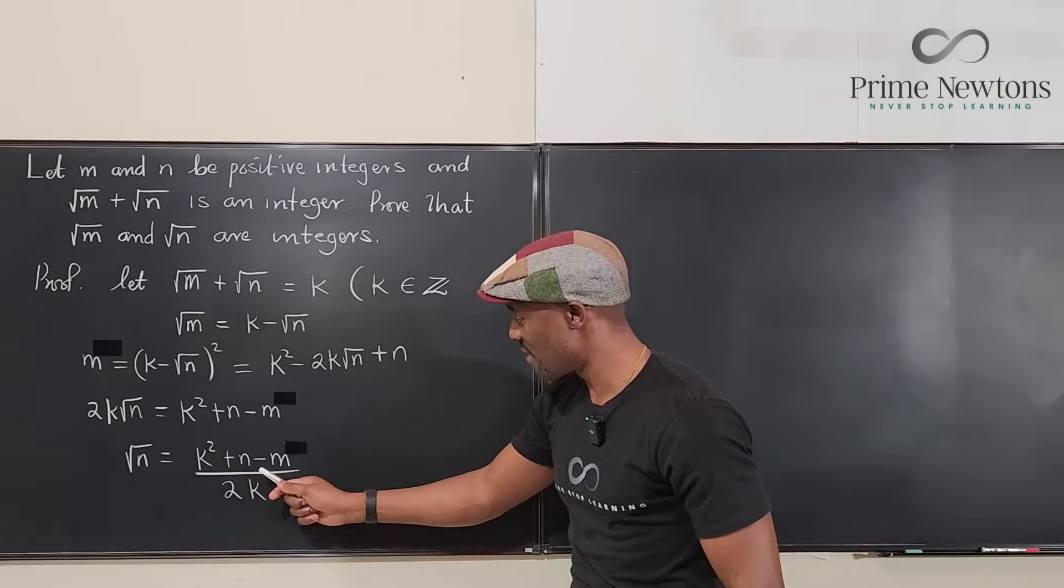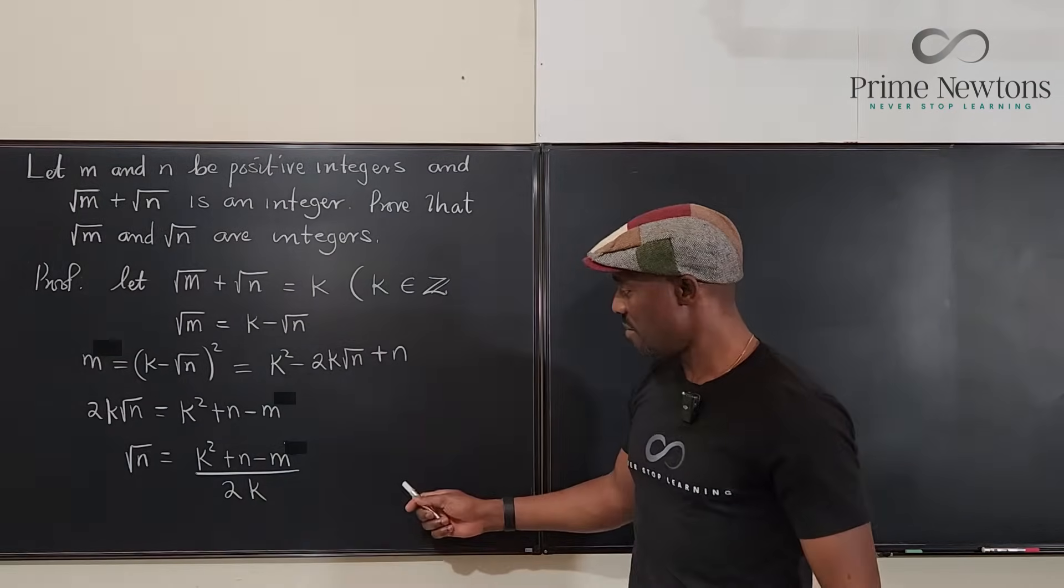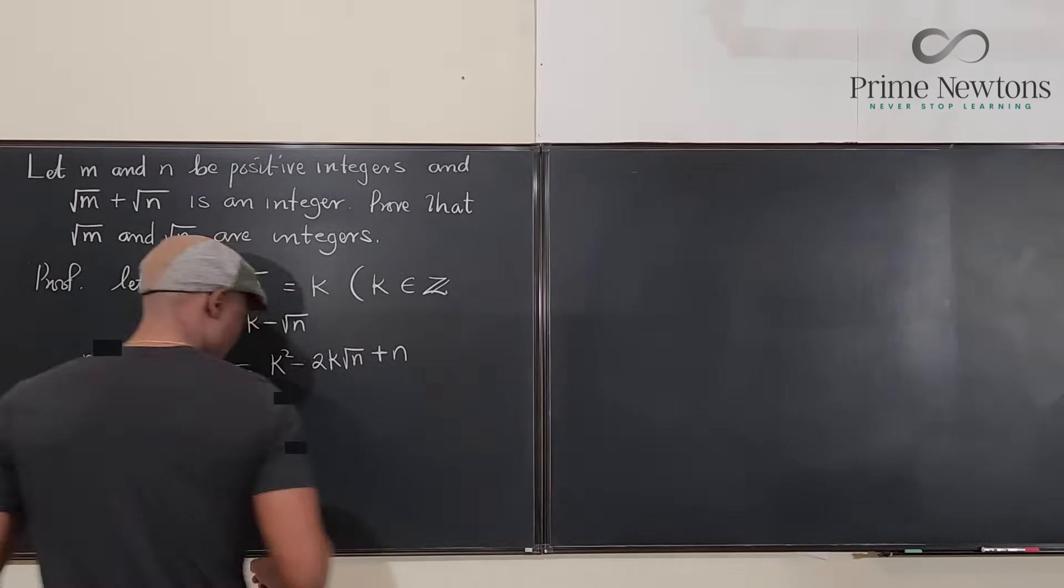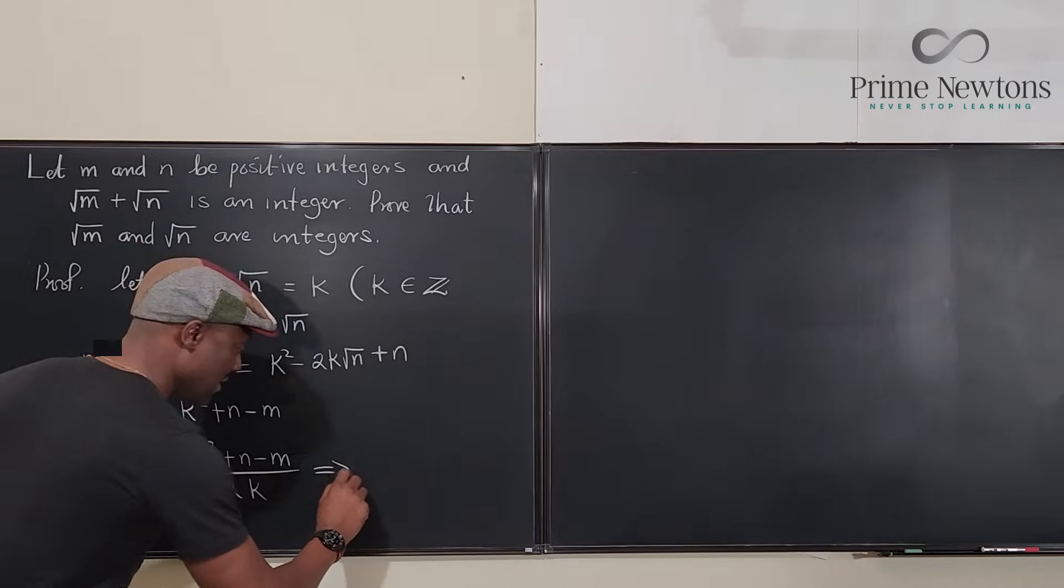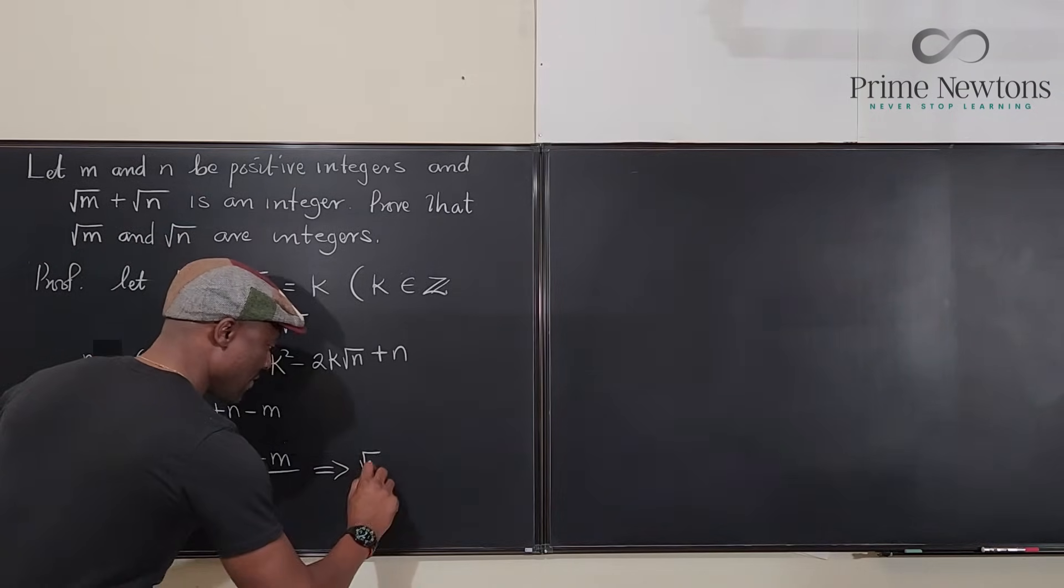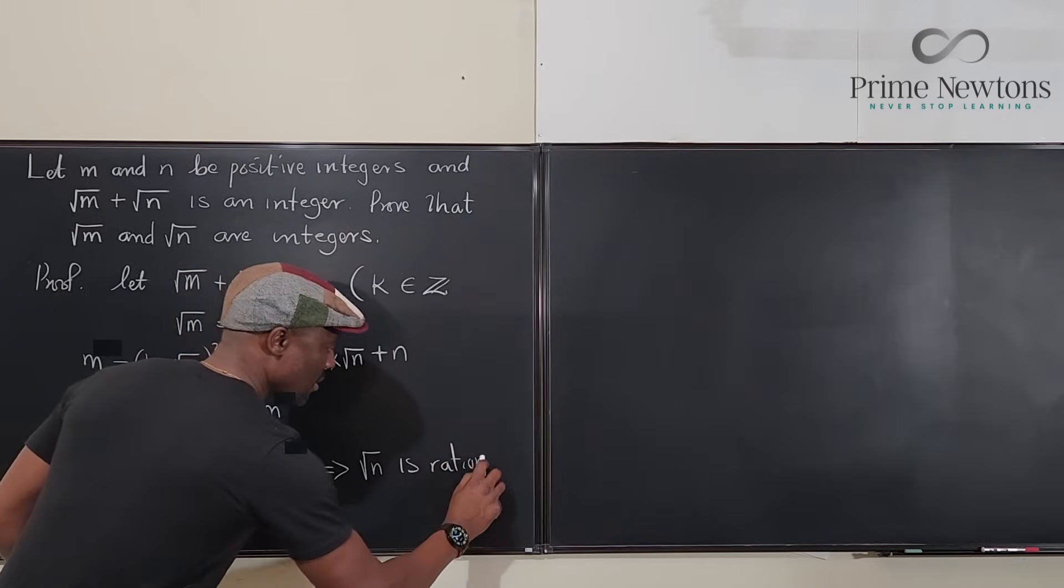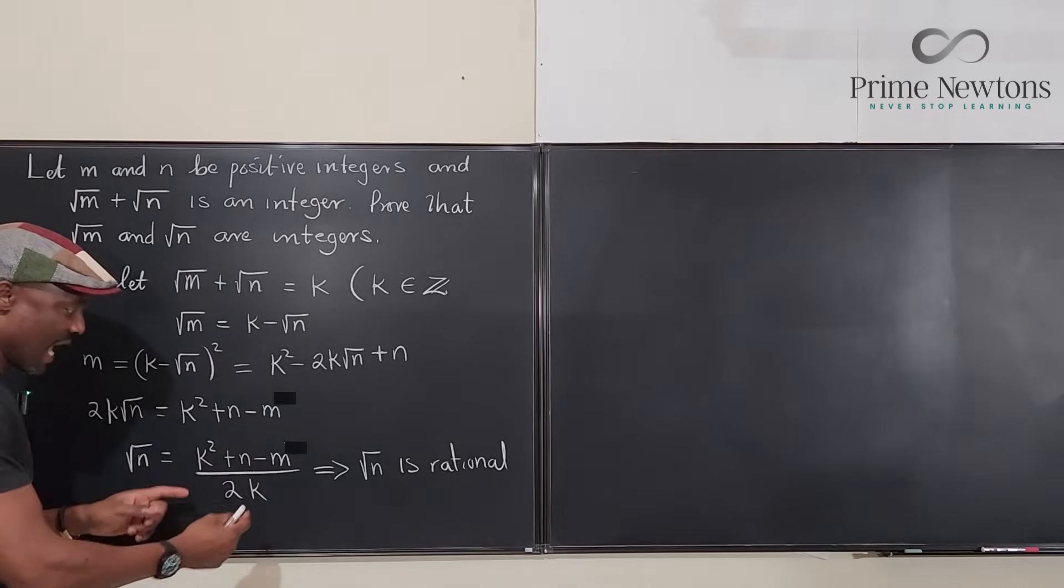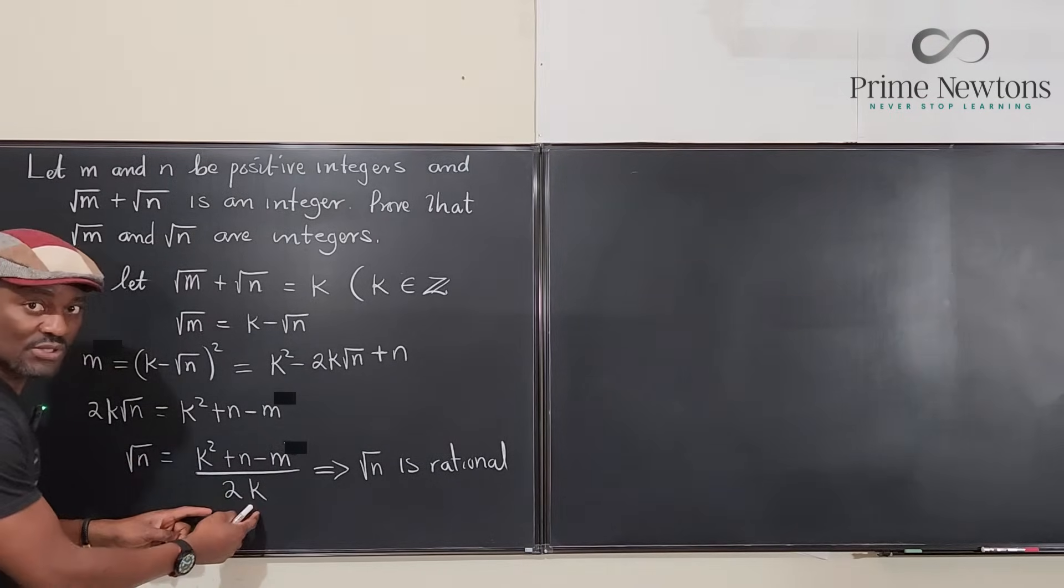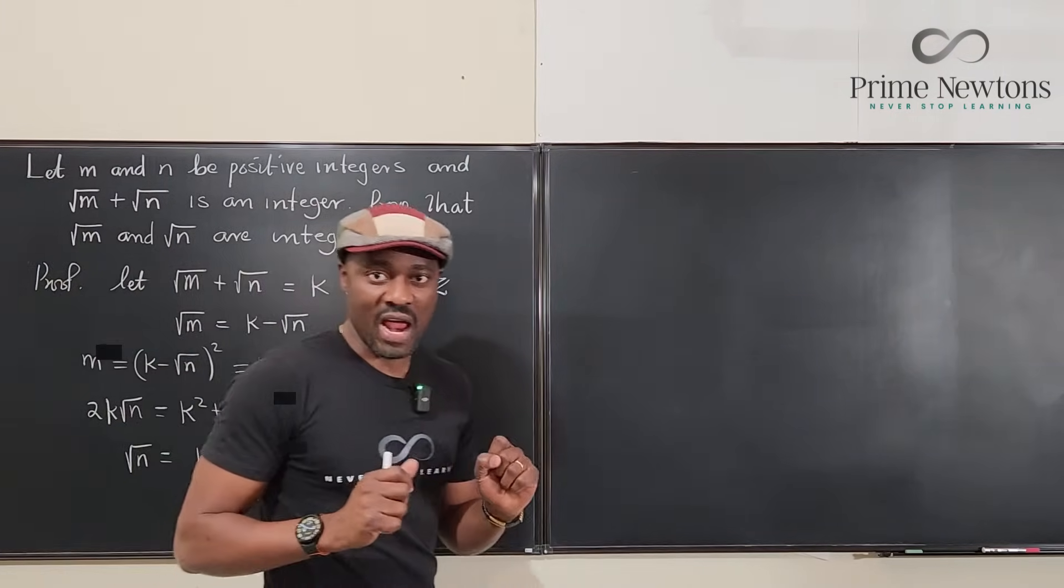So here we're going to have this is a rational number. So we can say this implies that √n is rational. The fact that we could write it this way, an integer divided by an integer, means it is rational.